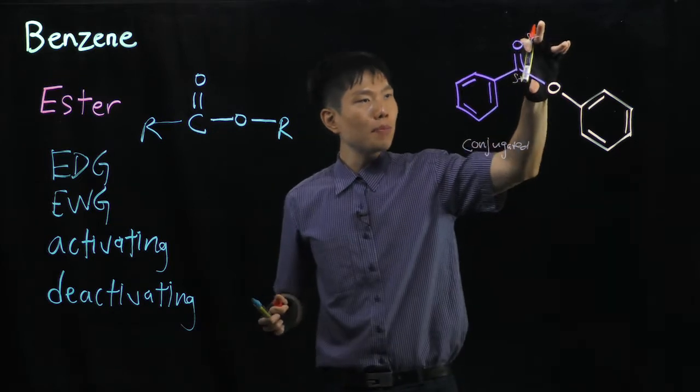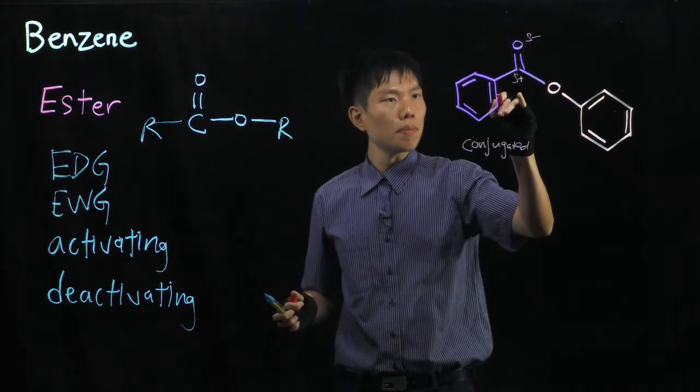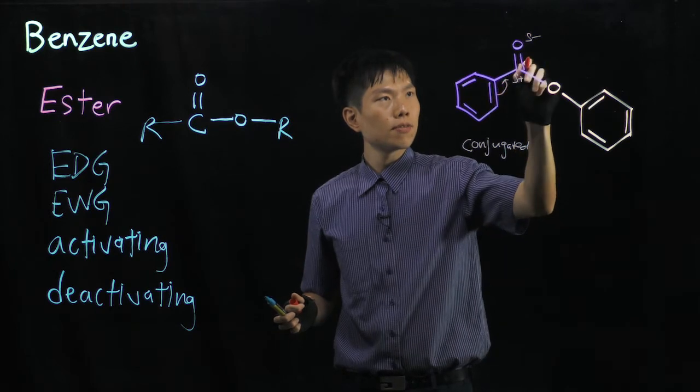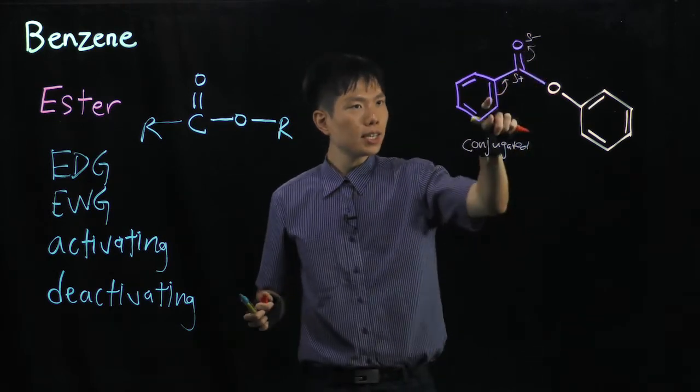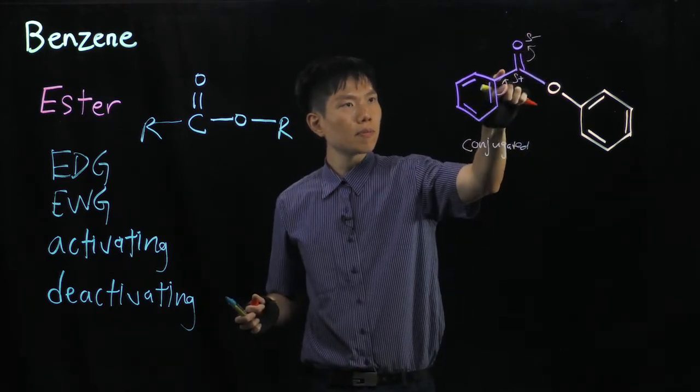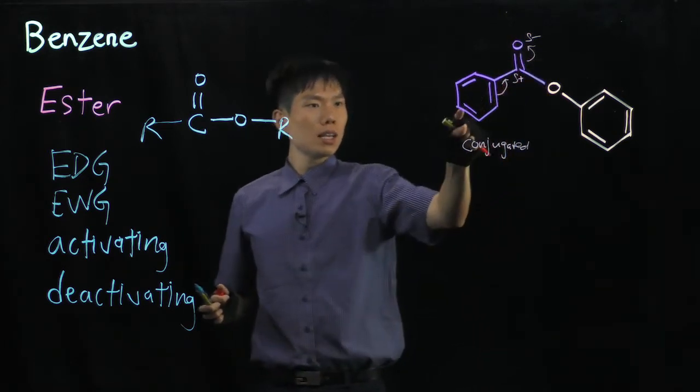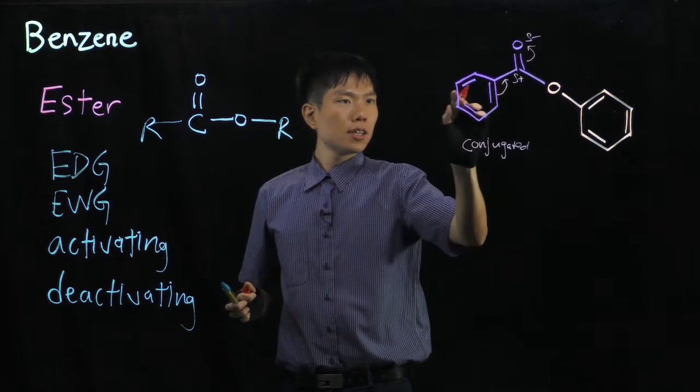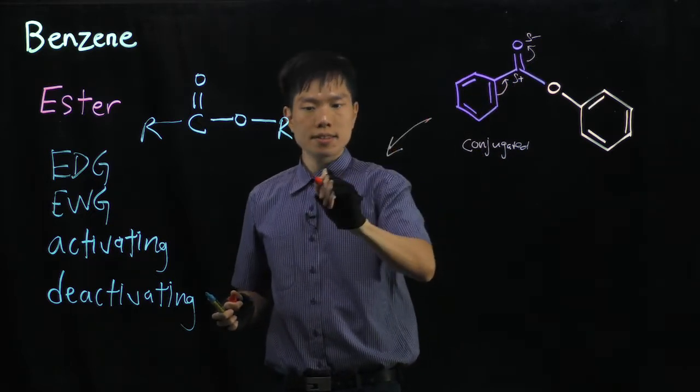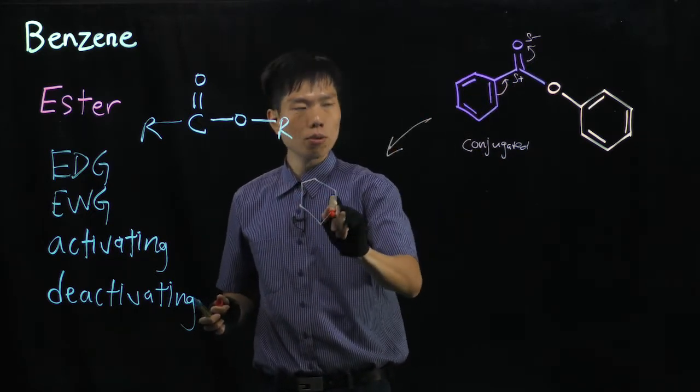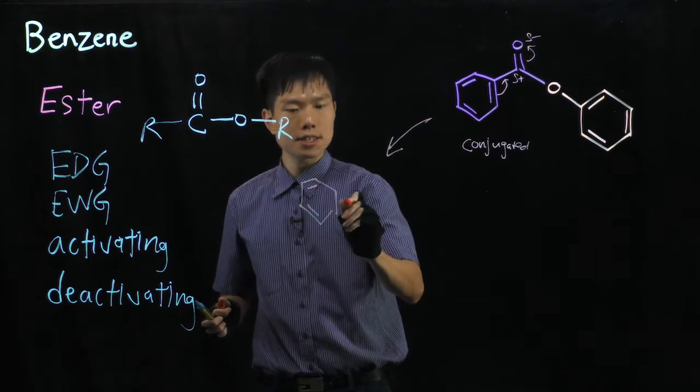This polarized pi bond will pull electrons from the benzene ring this way. This pi bond moves up, pushing these pi electrons up. So if I follow the trail of the purple ring, what I have here will be this.